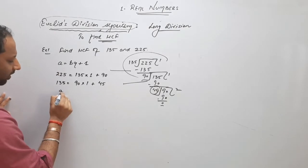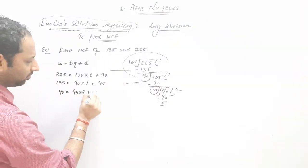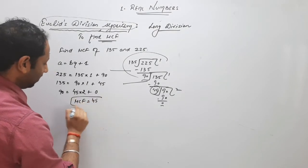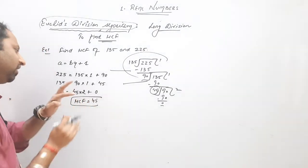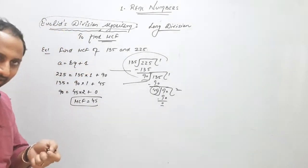And in the last one, dividend is 90, divisor 45, quotient 2, remainder 0. So we know HCF is 45. If you see it, only this formality will be more compared to sixth class. Am I right?